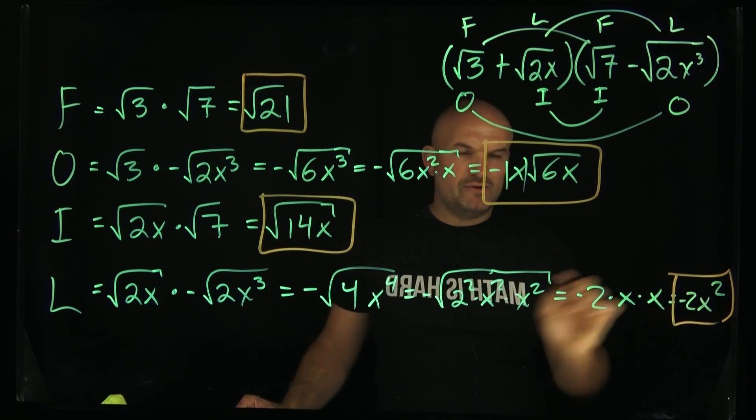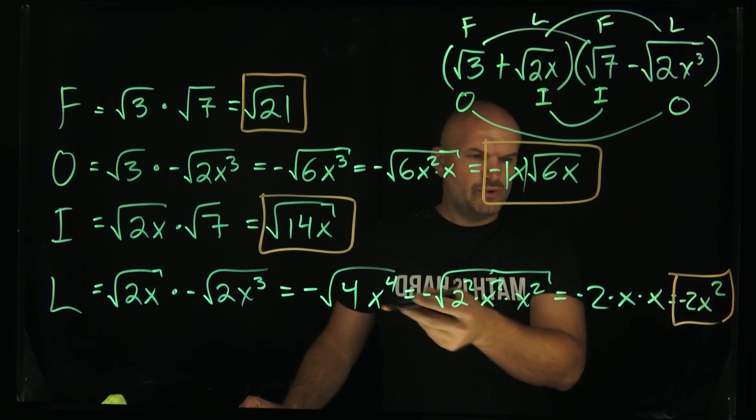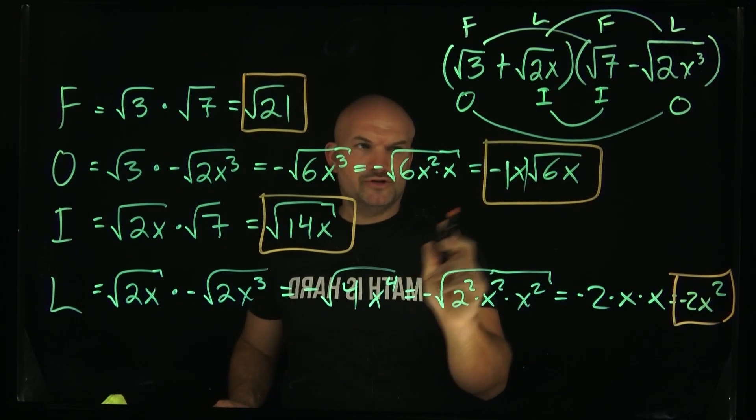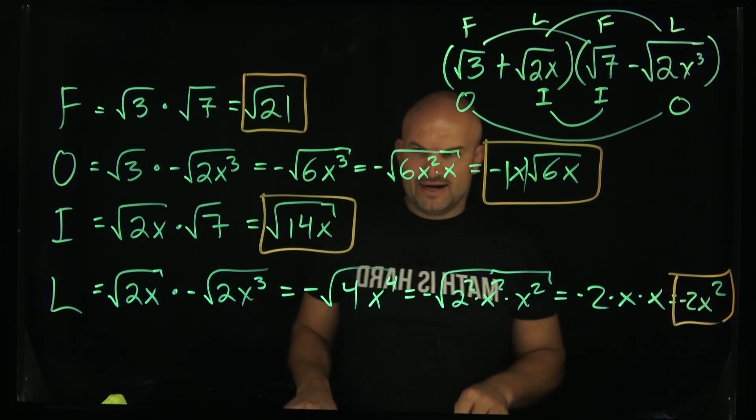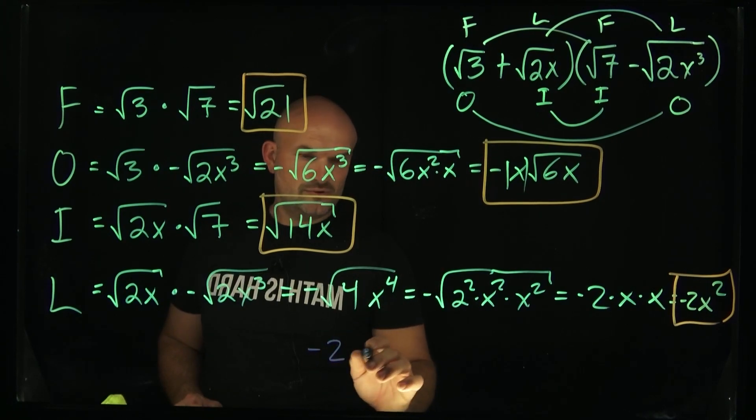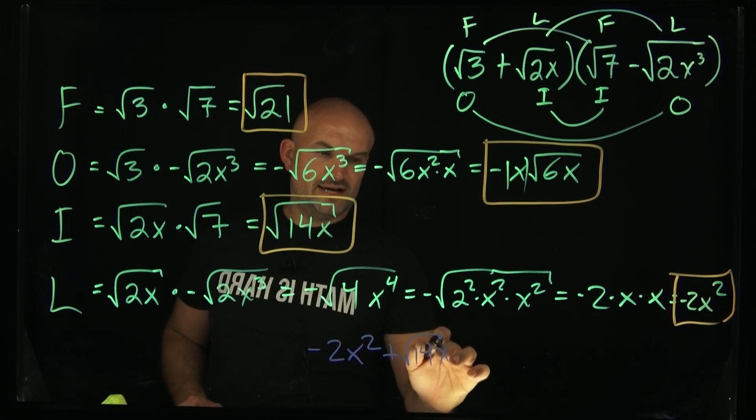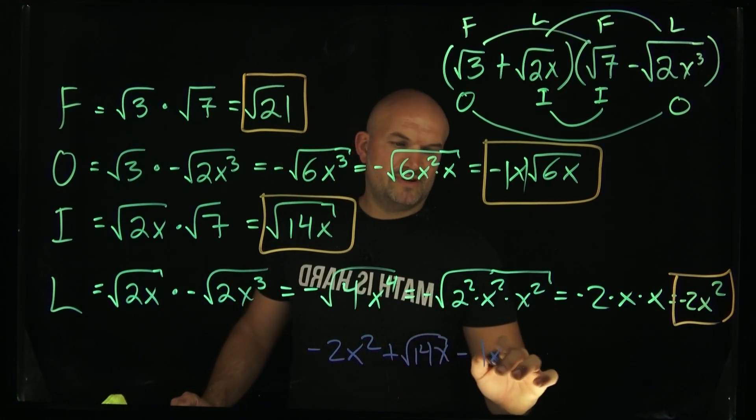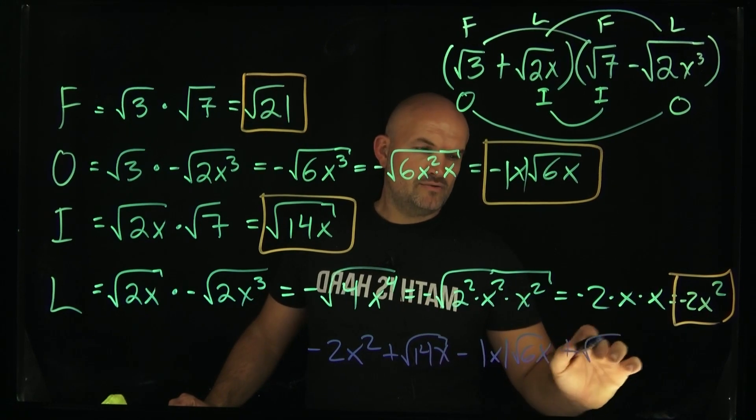There's nothing else I can combine. Therefore, I can now rewrite my final answer as negative 2x squared plus square root of 14x minus absolute value of x square root of 6x plus the square root of 21.